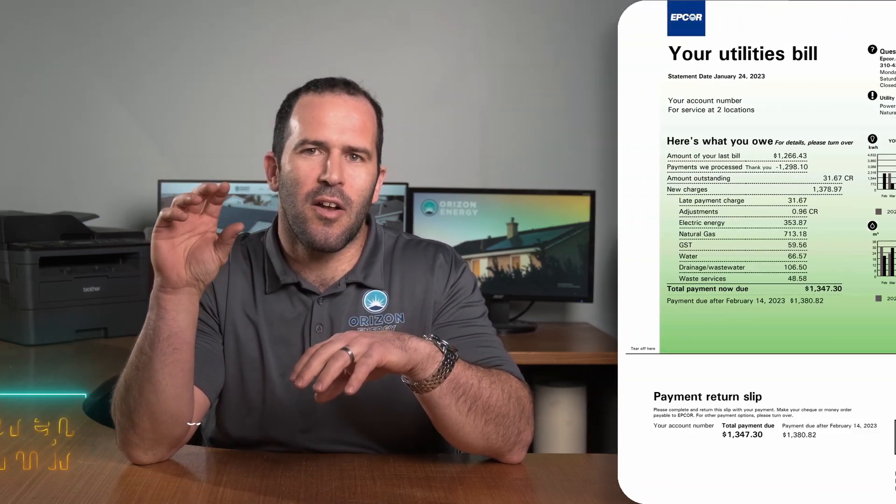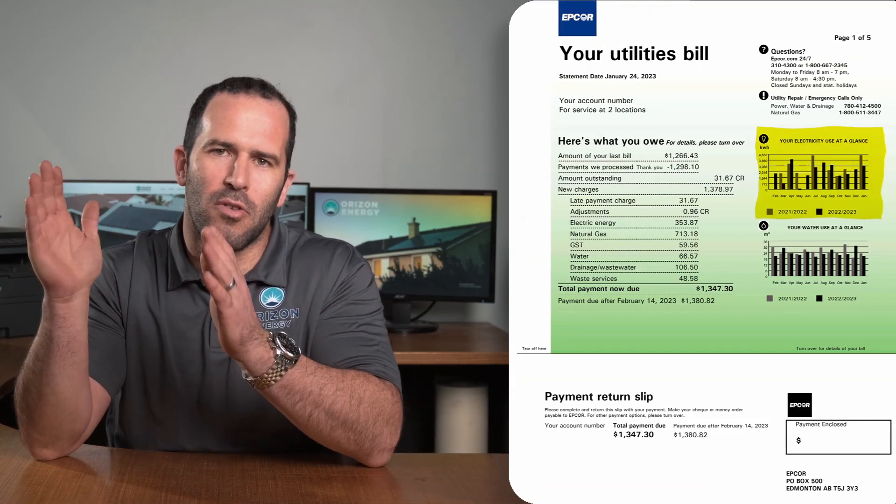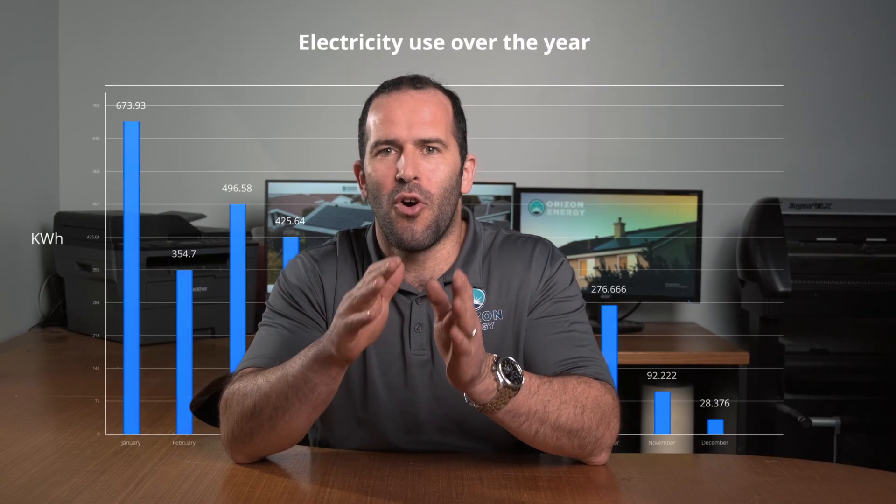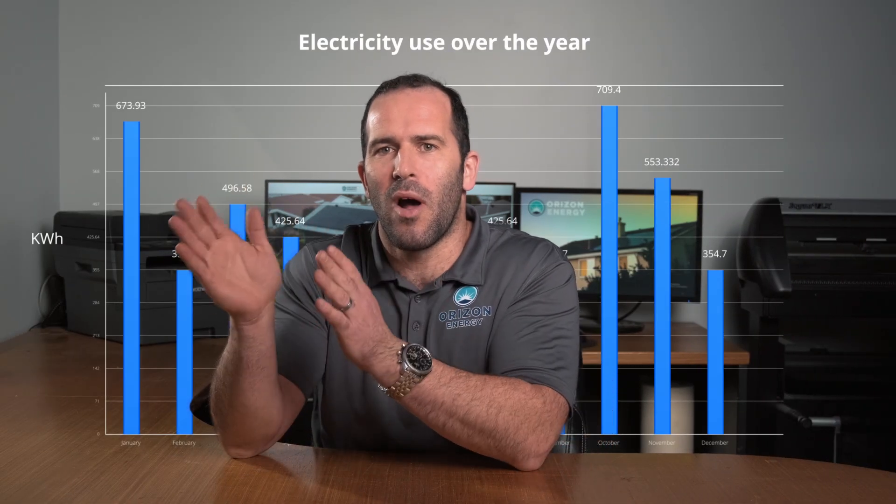How does solar sizing work? How do I know how much solar power I should produce? When we ask you to supply us a bill, it's for a few reasons. When we get a utility bill, especially on the first page, you can see there is a graph that shows your annual consumption — your kilowatt hours consumption over the last 12 months.